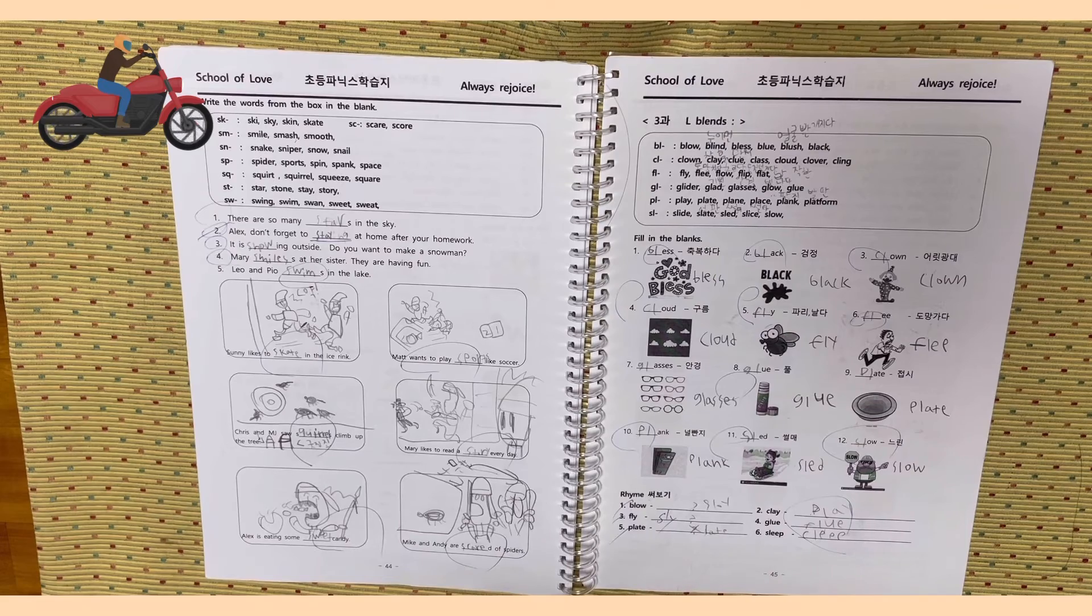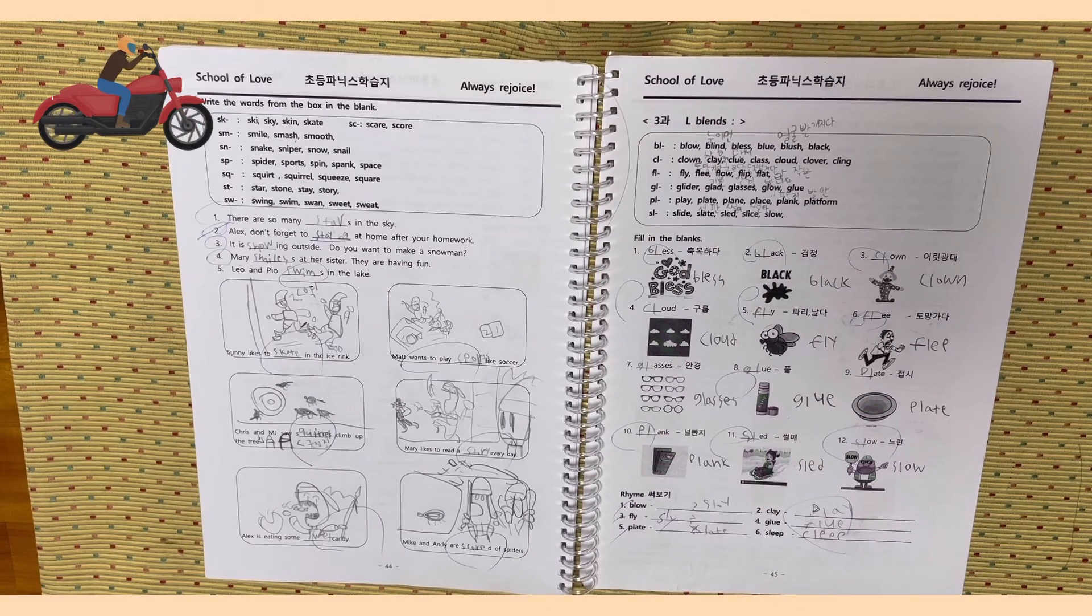Chris and MJ, so squirrels climb up the tree. Mary likes to read a story every day. Alex is eating some sweet candy. Mike and Andy are scared of spiders.